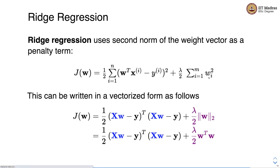This can be written in vectorized form. The second norm of the weight vector can be written as w-transpose times w. We have written the modified loss function in vectorized form. Remember that the left-hand side term is exactly like what we have in linear regression, and now we have added a new penalty term based on the second norm of the weight vector.